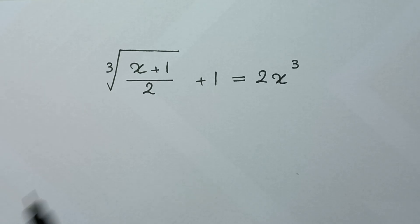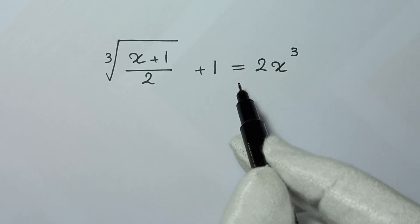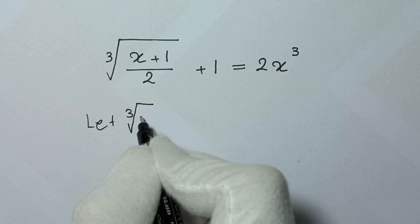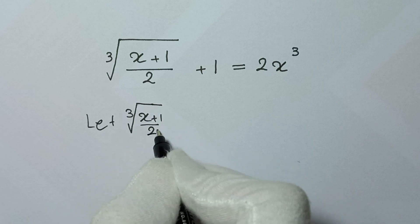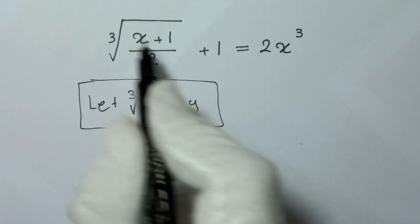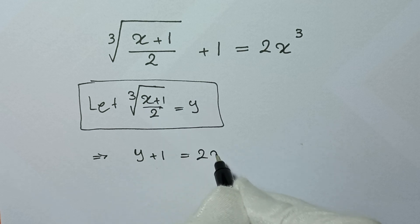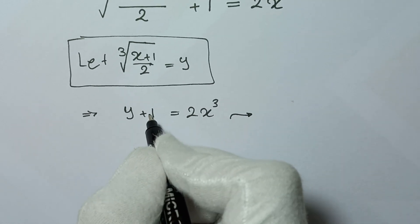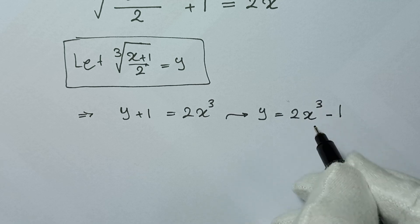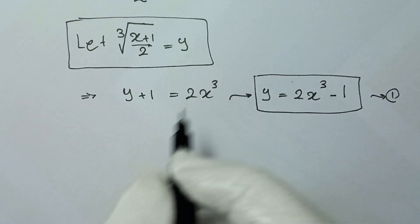Hello, welcome. We need to solve: cube root of (x+1)/2 plus 1 equals 2x³, to find the values of x. In the first step, we let cube root of (x+1)/2 equal y. We substitute into the equation: y plus 1 equals 2x³. Taking 1 to the other side, we get y equals 2x³ minus 1. We call this equation 1.